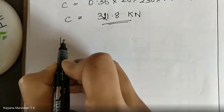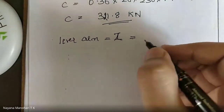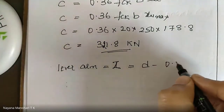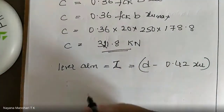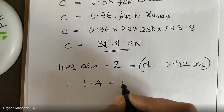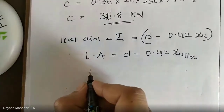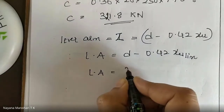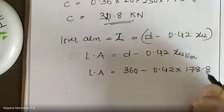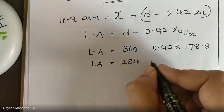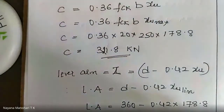Next is the lever arm, denoted as Z. The lever arm is given by: Z = D − 0.42 × XU. Since the section is over-reinforced, replace XU with XU max (XU limit). Lever arm Z = 360 − 0.42 × 178.8 = 284.9 mm.